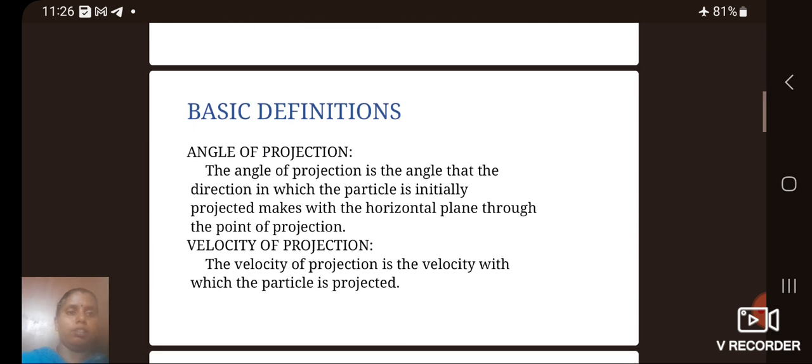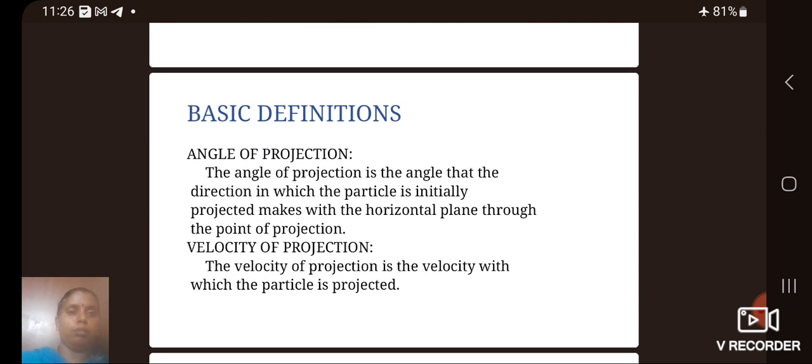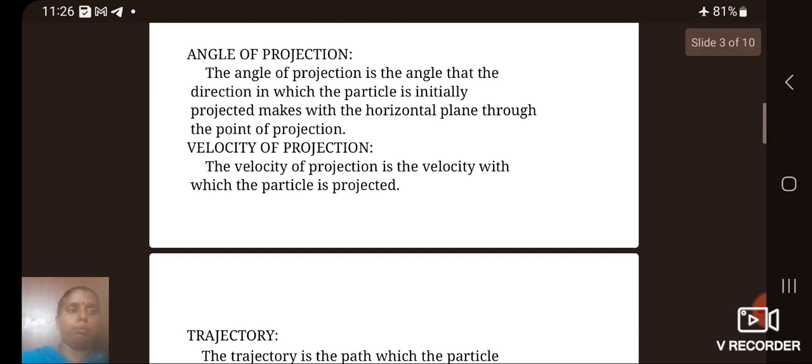The basic definitions of the projectile are angle of projection. The angle of projection is the angle that the direction in which the particle is initially projected makes with the horizontal plane through the point of projection. The velocity of projection is the velocity with which the particle is projected.